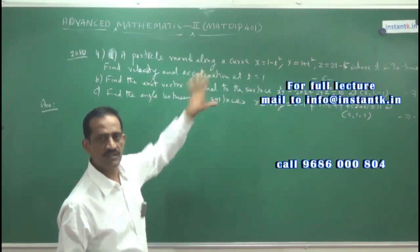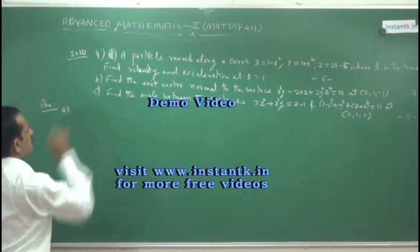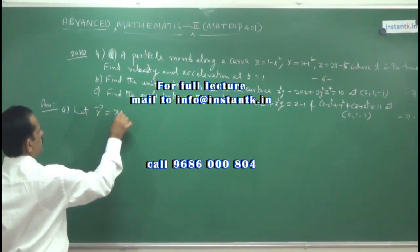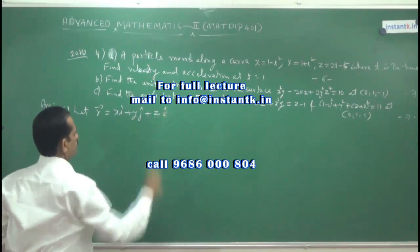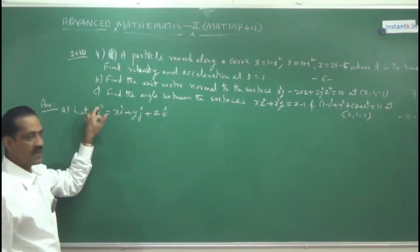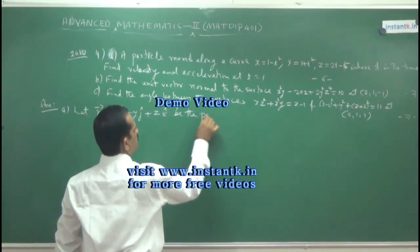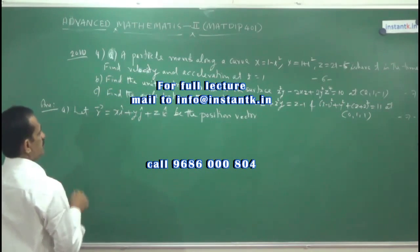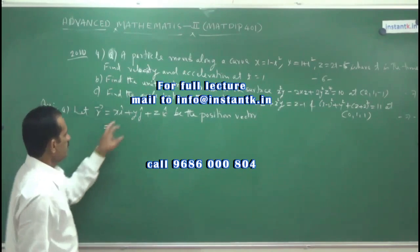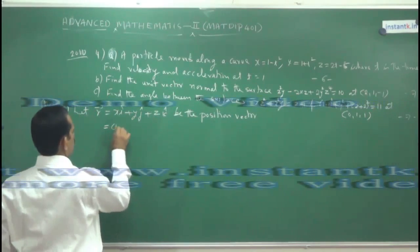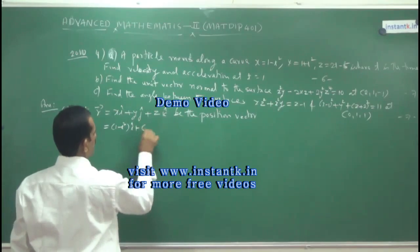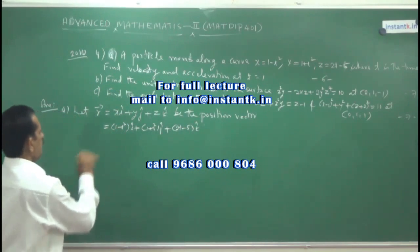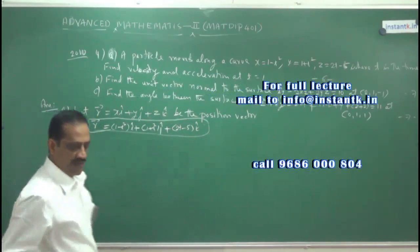When a problem of this type is given, first write the position vector. Let vector r equal x into i-cap plus y into j-cap plus z into k-cap — be the position vector of the moving particle. For unit vectors, put a cap on top; for vectors, put an arrow mark. Write x, y, and z in terms of t. So vector r equals (1 minus t-squared) i-cap plus (1 plus t-squared) j-cap plus (2t minus 5) k-cap.